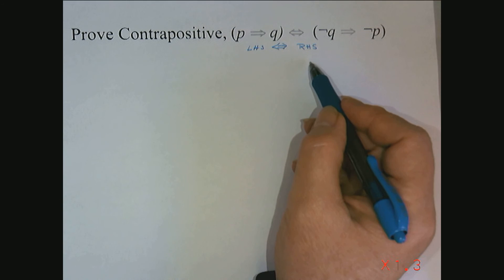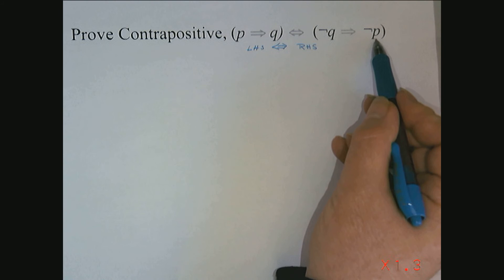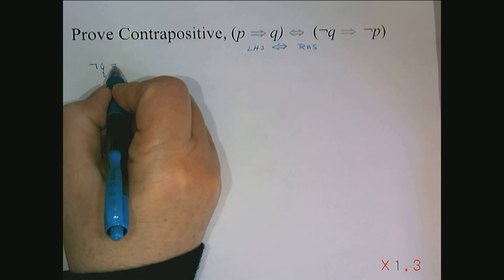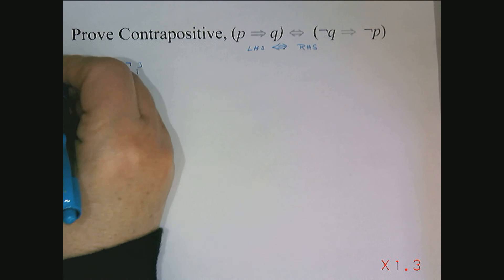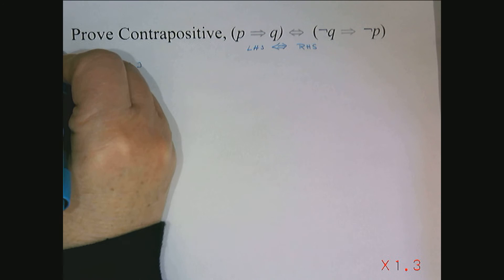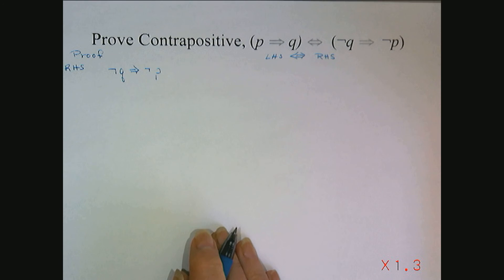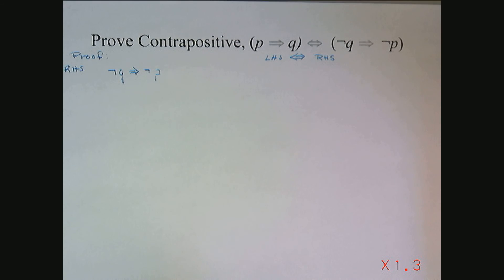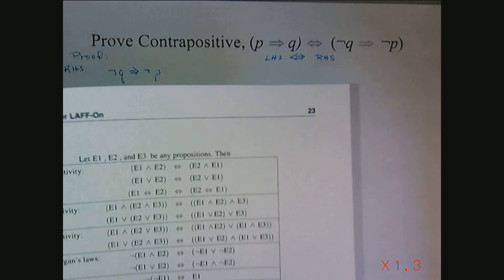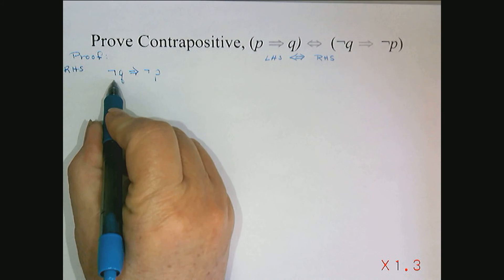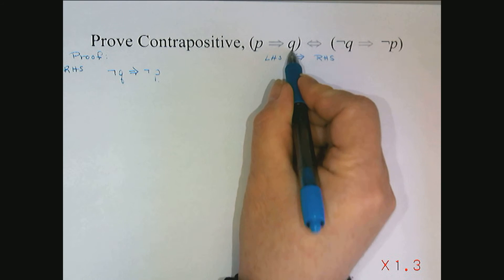One strategy I like to use is to start with the side that seems most complicated. In this particular case, I'm going to look at not Q implying not P, because the right-hand side seems a bit more complicated. Now I'll use my list of basic equivalences to try to show that this is equivalent to P implying Q.